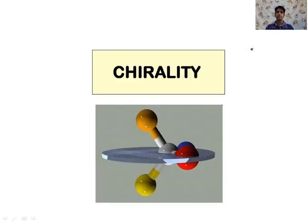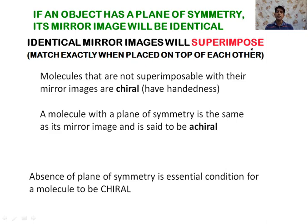After plane of symmetry, the next term is chirality. An object which has a plane of symmetry will be identical with its mirror image and will superimpose on its mirror image — such objects are known as achiral. A molecule with a plane of symmetry is the same as its mirror image and is said to be achiral. On the other hand, some molecules do not have a plane of symmetry, so their mirror images are not superimposable on them — such molecules are known as chiral.